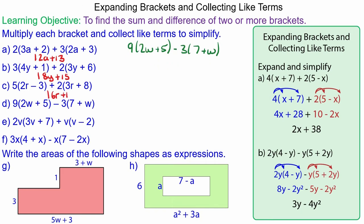For question d we have 9 times 2w which is 18w, 9 times 5 which is 45, minus 3 times 7 which is minus 21, and minus 3 times w which is minus 3w. And to collect the like terms, 18w minus 3w is 15w, and positive 45 take away 21 is positive 24.